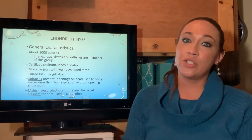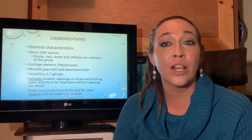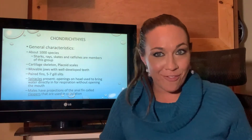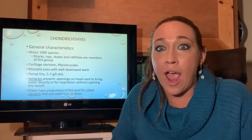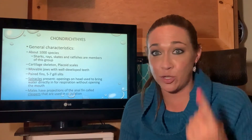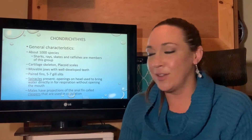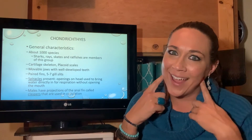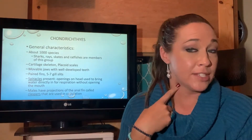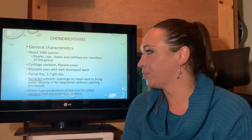Now focusing on the Chondrichthyes — cartilaginous fishes. The number-one characteristic is a cartilaginous skeleton. They also have placoid scales, a hinged jaw, paired fins, and five to seven gill slits with no operculum. All sharks have five gill slits except the sixgill shark and the sevengill shark, which have six and seven respectively.